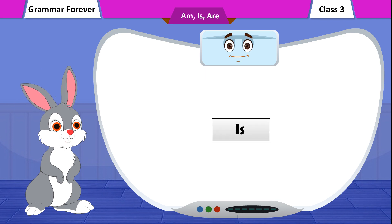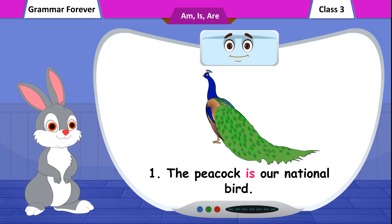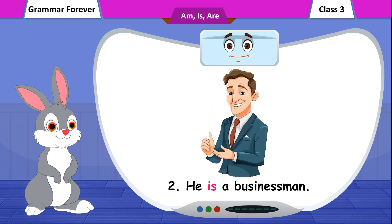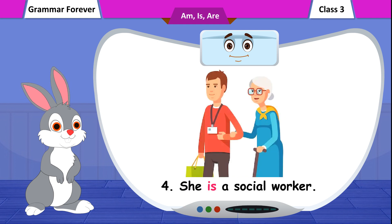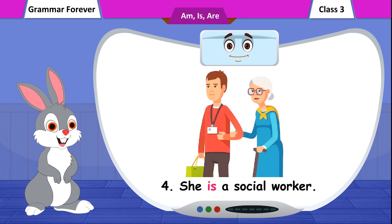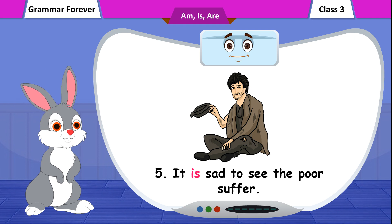IS. 1. The peacock is our national bird. 2. He is a businessman. 3. Mr. Mehta is a rich man. 4. She is a social worker. 5. It is sad to see the poor suffer.